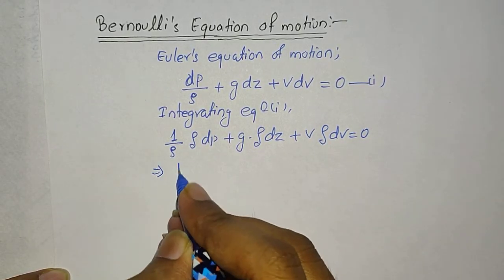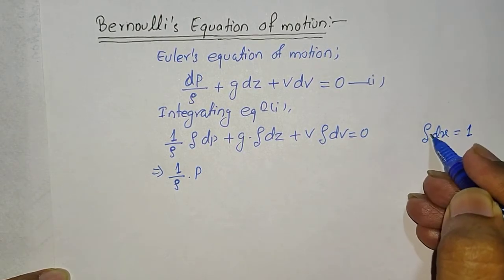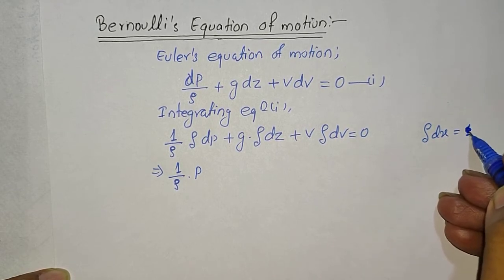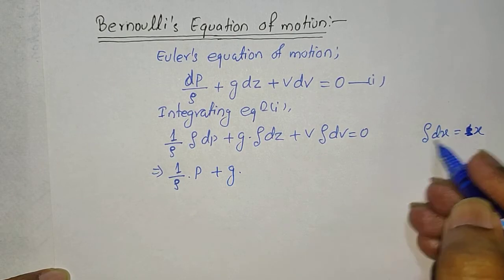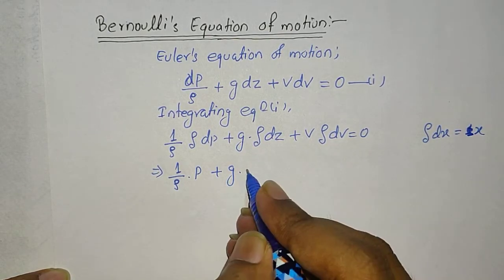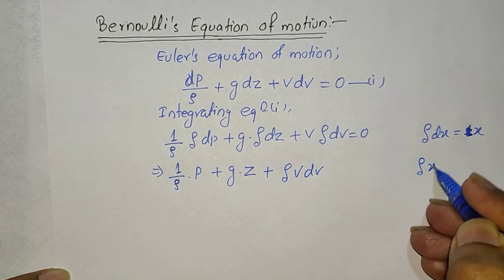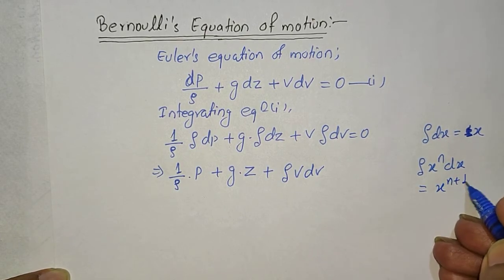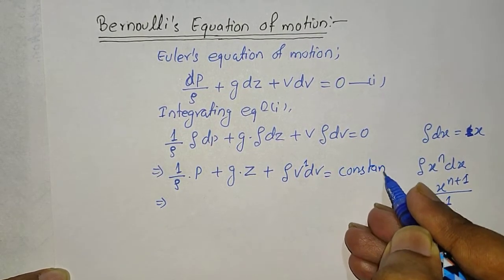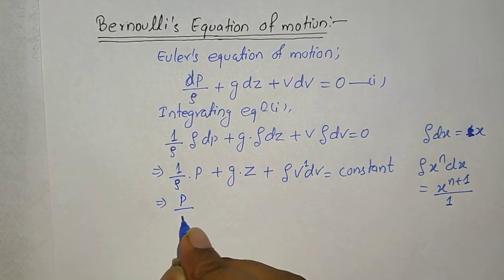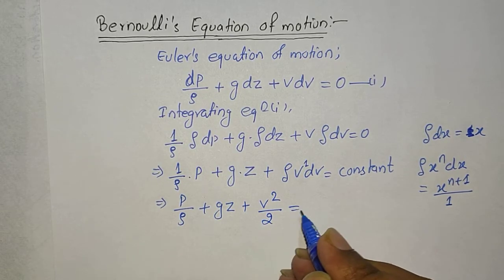On integrating, (1/ρ)∫dp gives P, because ∫dx = x. So here it will be P. Then g·∫dz gives g·z, since ∫dz = z. For the last term, ∫V·dV — using the rule that ∫x^n dx = x^(n+1)/(n+1) — gives V²/2. So the result is: P/ρ + g·z + V²/2 = constant.